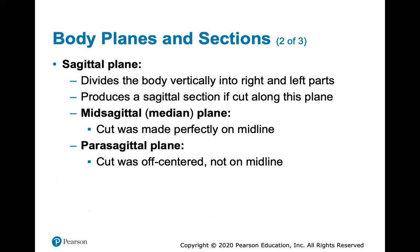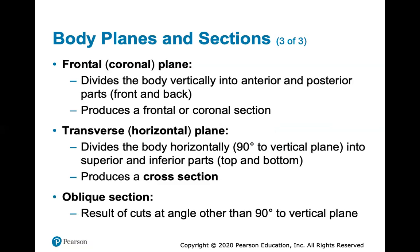A mid-sagittal cut is made perfectly on the midline, dividing the body into equal right and left halves. A parasagittal plane is also along the midline but a little bit off-centered — for example, cutting down from top to bottom through the shoulders. So parasagittal is slightly off the midline, while mid-sagittal is perfectly down the center.